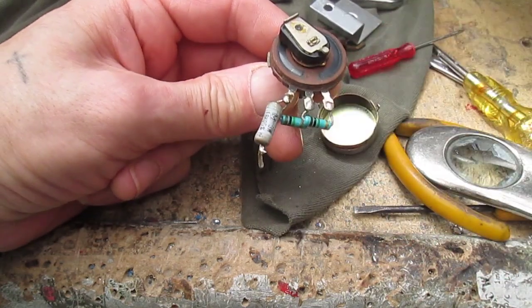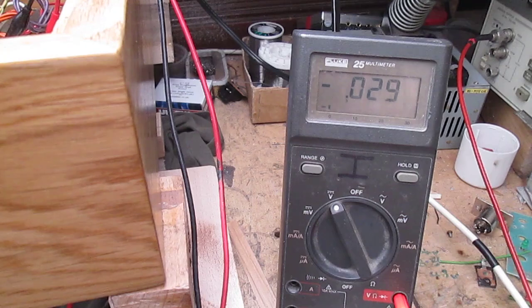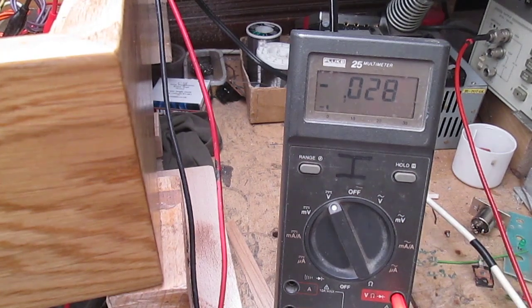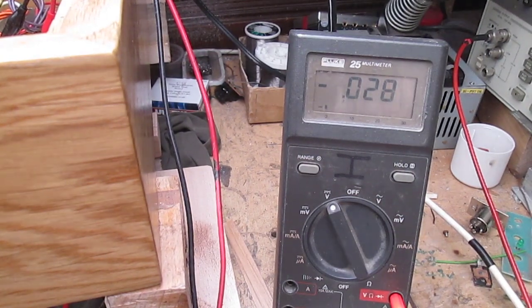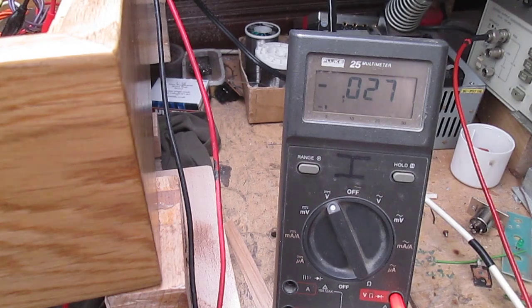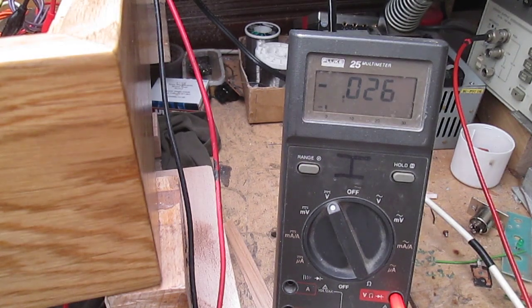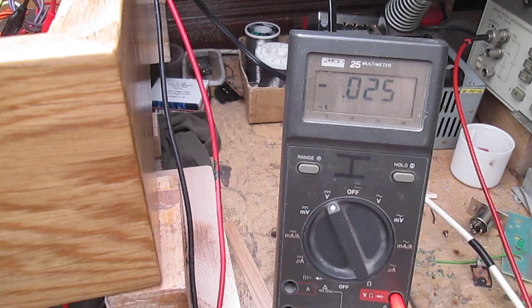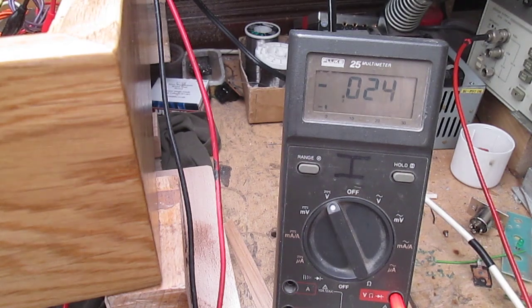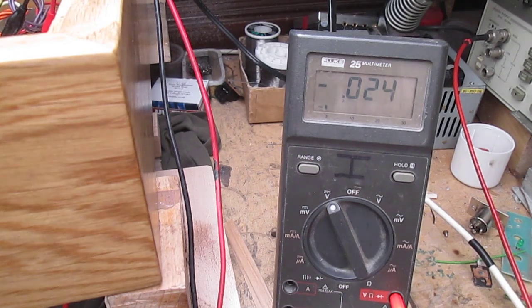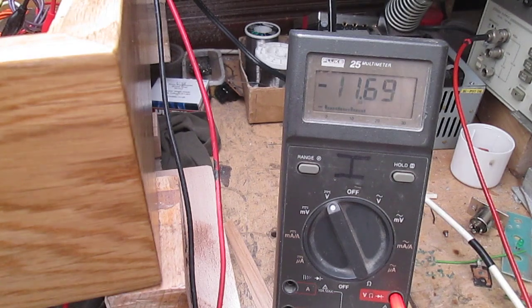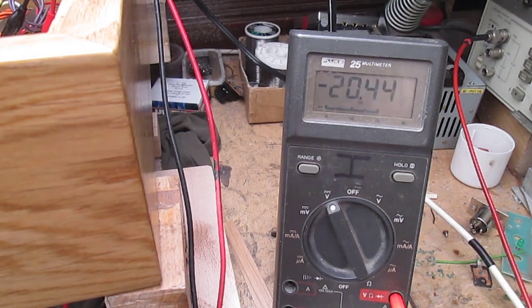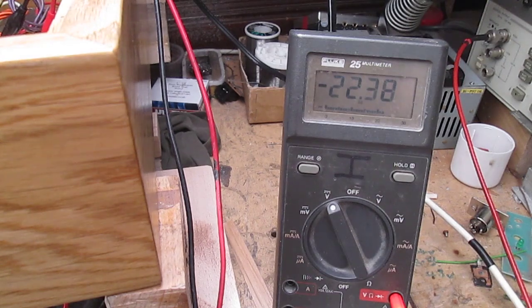Now I have this Fluke 25 monitoring the bias voltage. I have reinstalled the pot after cleaning it. And obviously we get now because I forgot, and minus 21. That's a little bit low.